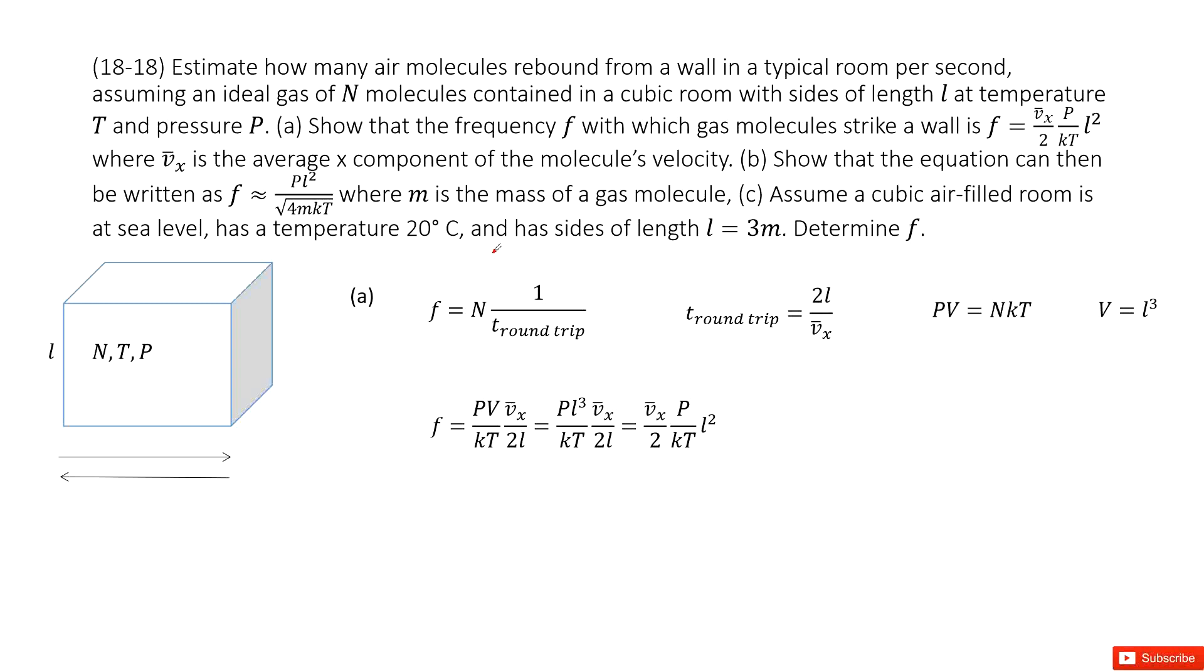Welcome to my channel. I'm Zhang Jingxu. Let's look at problem 18 in chapter 18. Chapter 18 is about kinetic energy of the gas. There we have the air molecules in a cubic room or a cubic room, so it looks like a box. For this box, we know the sidelines L, we know the temperature, we know the pressure, and we also know the number of the molecules n. So n, T, P, we know it.